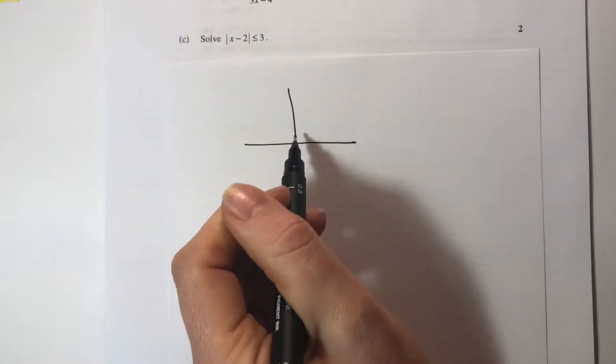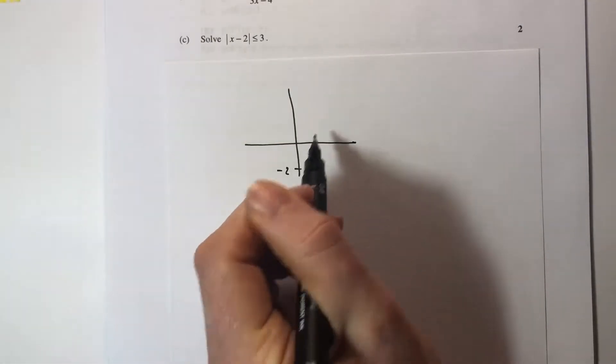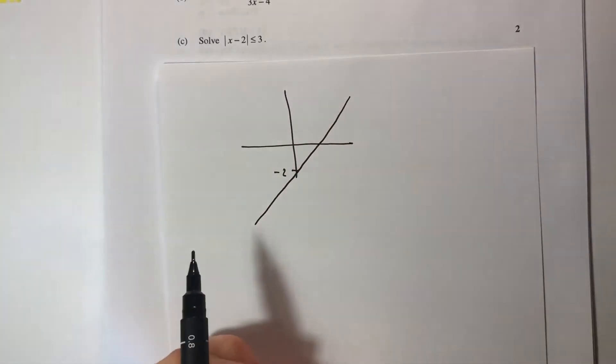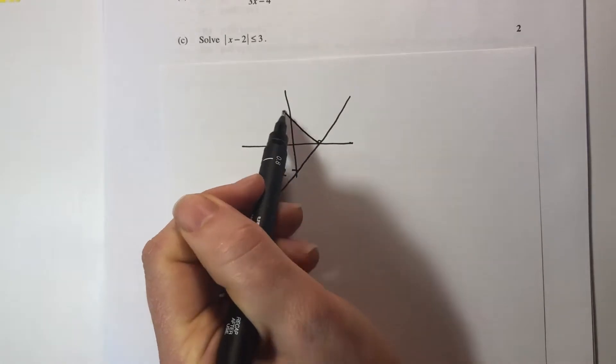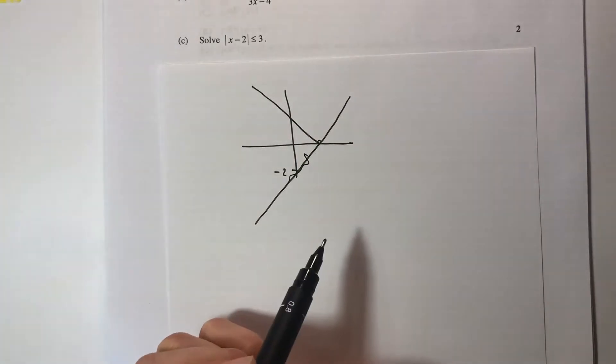So the absolute value of x minus 2 would be a 45 degree straight line that would cut like that. That would be x minus 2, so absolute value would mean bounce instead of going underneath.